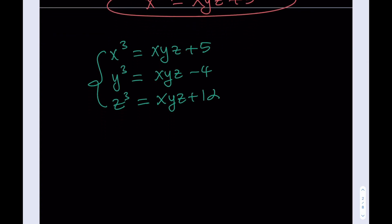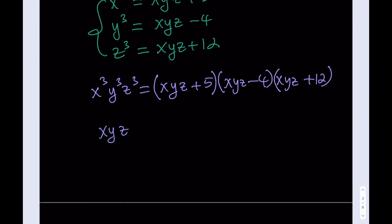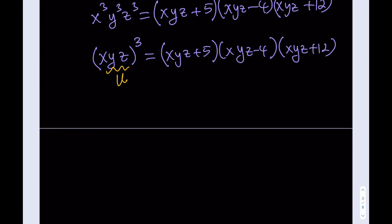What I'd like to do is multiply all three equations together. I'll substitute u for xyz, so the left side becomes x cubed times y cubed times z cubed, which equals xyz cubed, i.e., u cubed. The right side becomes u plus 5 times u minus 4 times u plus 12. Let me distribute u minus 4 and u plus 12 first, giving u squared plus 8u minus 48.